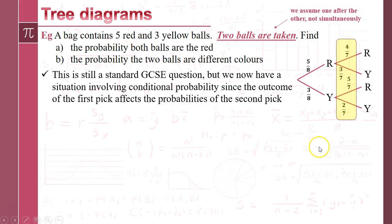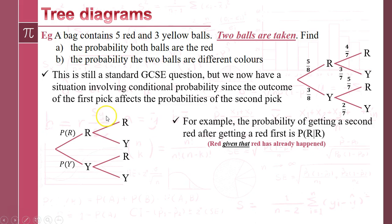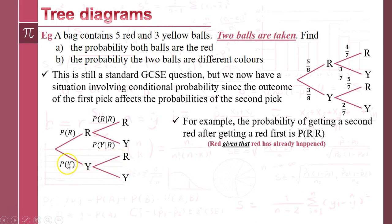I'm more interested in what the tree means in terms of probability notation. Instead of putting numbers on there, let's put our notation on. The first branch is P(R₁) and P(Y₁). Looking at the top second branch, we've got the probability of getting red given that the first one was red — that's P(R|R). So the second branches become our conditional probabilities, the ones that change as a result of what happened first: P(R|R), P(Y|R), P(R|Y), and P(Y|Y).